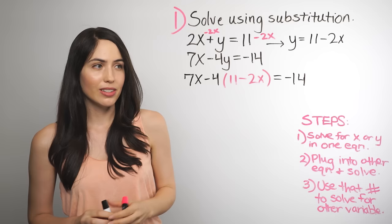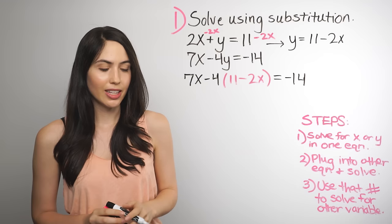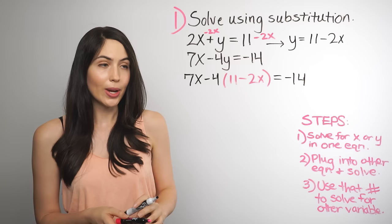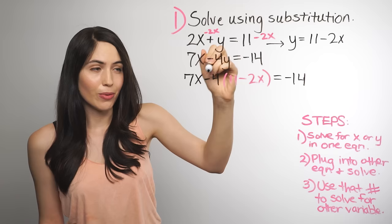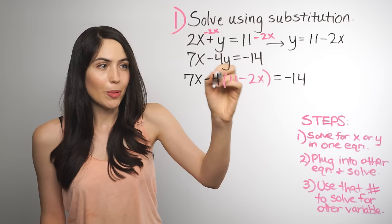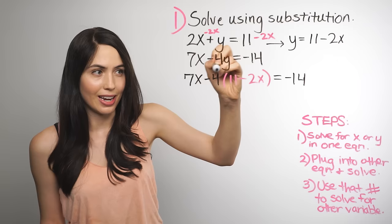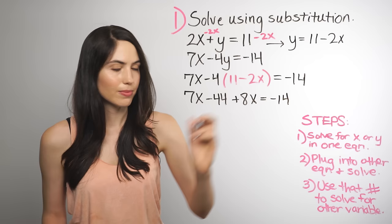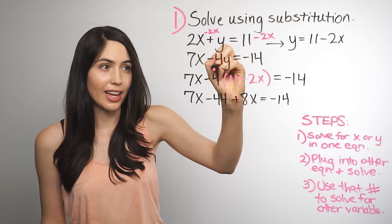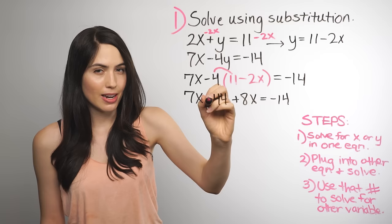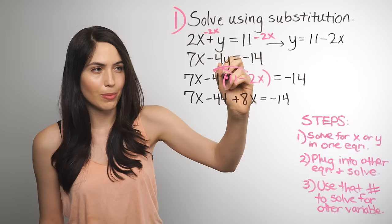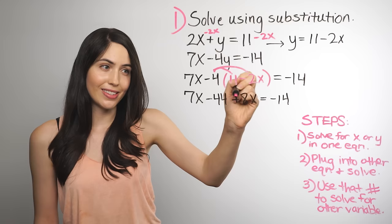From here, you just want to simplify so that you can solve for something. The way to do that is to get rid of the parentheses, but when you open the parentheses you have to take the negative 4 and apply it to both terms inside. You can't just take away the parentheses — you have to multiply every term inside by negative 4. I multiplied both the 11 to get negative 44, and also the negative 2x. Negative 4 times negative 2 is positive 8, so that term is plus 8x.